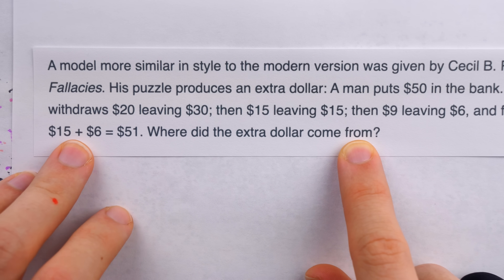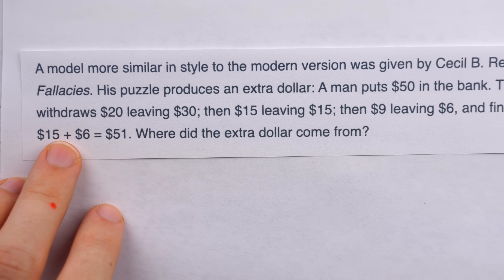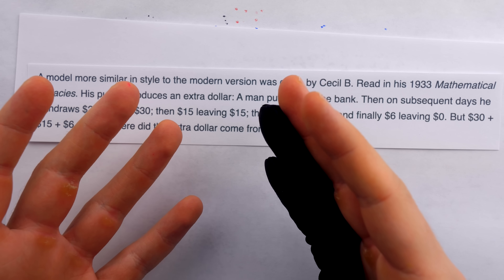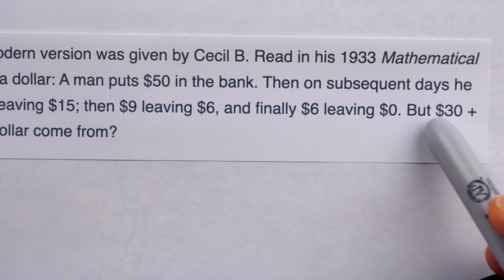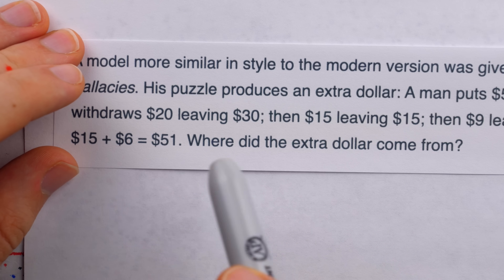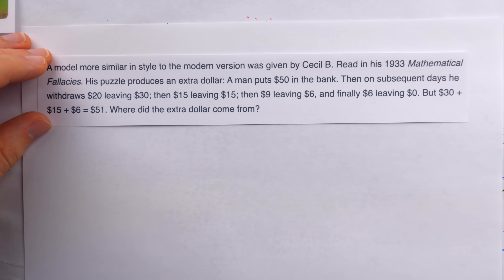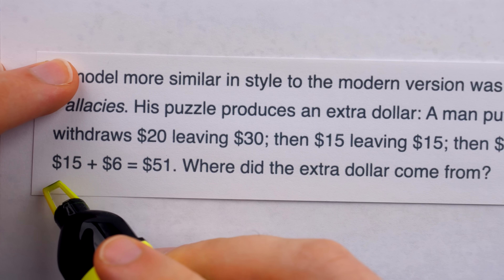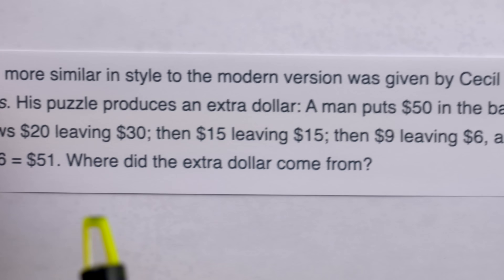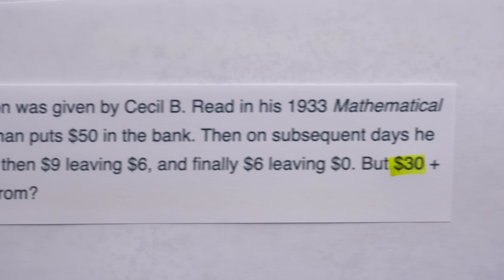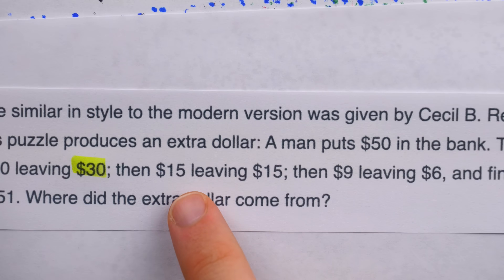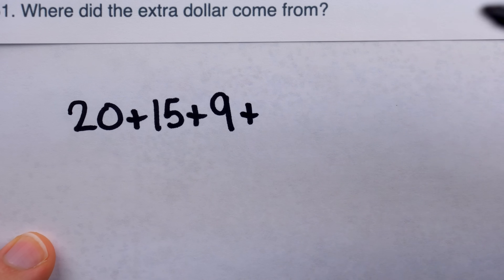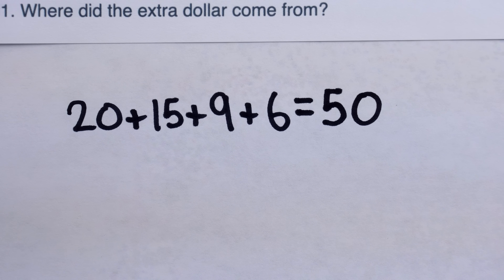This definitely has more of a similar flavor to the classic missing dollar riddle. However, this is a pretty obvious puzzle. There are two different types of money here: withdrawn amounts, and amounts that are left over after a withdrawal. In the sum $30 plus $15 plus $6, they've added up amounts of money that were left — and that doesn't have any necessary relation to the original amount. It's a little sneaky because $15 and $6 were also amounts withdrawn. But that $30 was never withdrawn; it was only left. If you only add up the withdrawals — $20 plus $15 plus $9 plus $6 — you indeed get that total of $50.